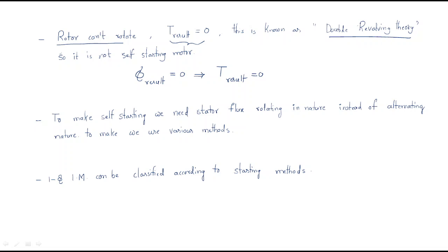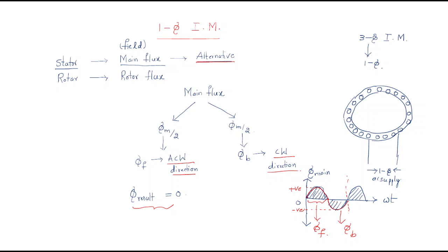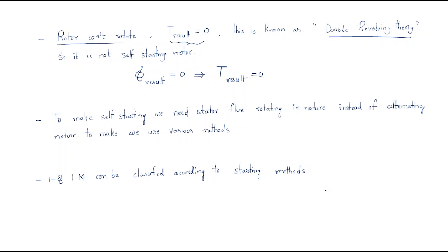Because the flux is alternating — one part positive and one part negative — the rotor cannot rotate. The resultant flux is zero, so the resultant torque is also zero. This is known as the double revolving field theory: one component rotates anti-clockwise and the other clockwise, resulting in zero net torque. Therefore, the single phase induction motor is not a self-starting motor.